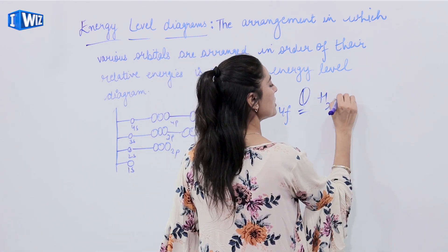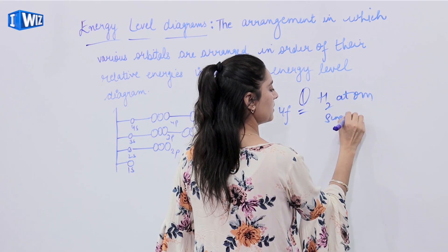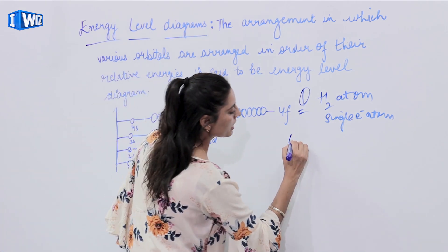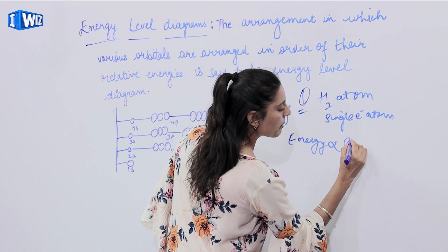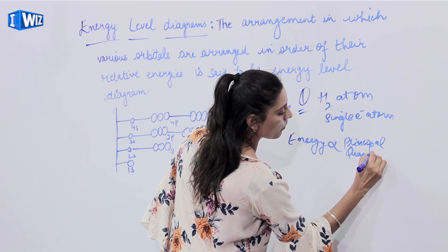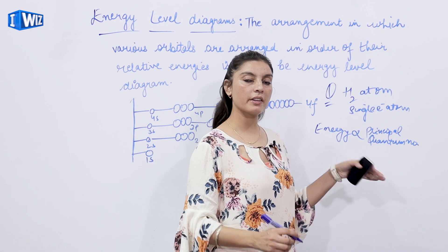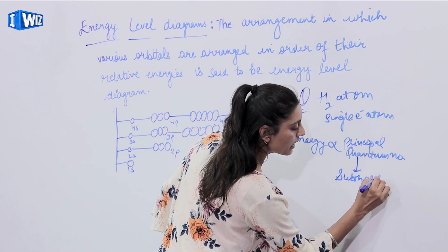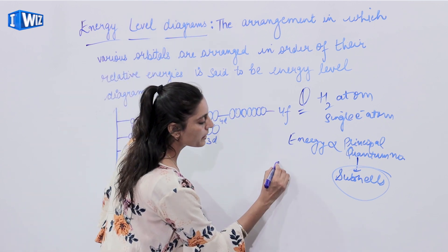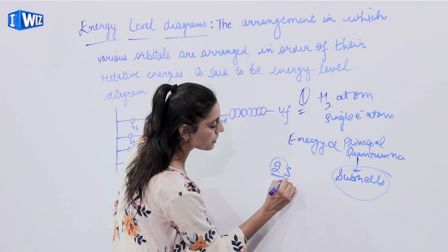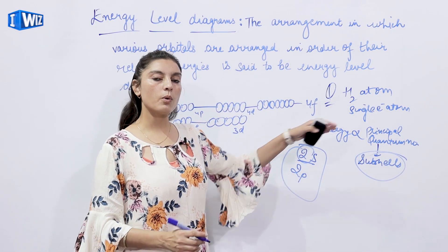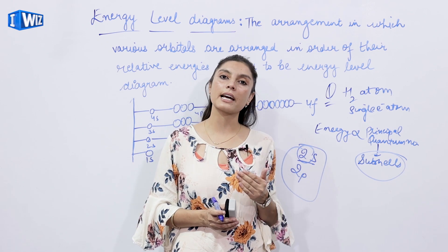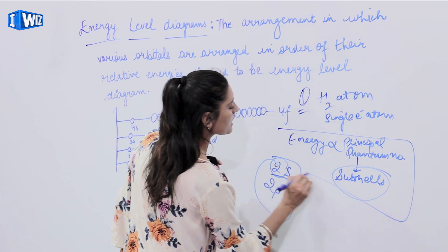For the hydrogen atom — a single electron atom — energy is directly proportional to the principal quantum number n. The subshells within the same shell all have the same energy. For example, if n=2, both 2s and 2p have the same energy. Similarly, for n=3, the subshells 3s, 3p, and 3d all have equal energy. But for n=4, the energy of 4s, 4p, 4d, and 4f are all equivalent in the hydrogen atom.